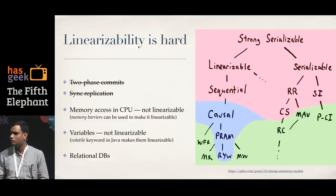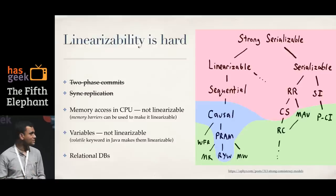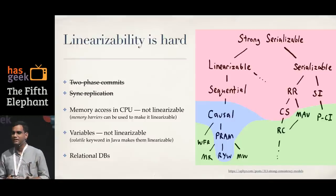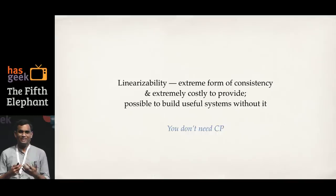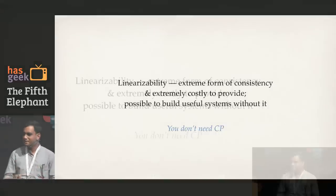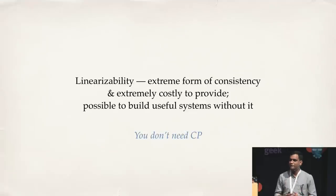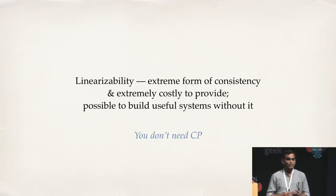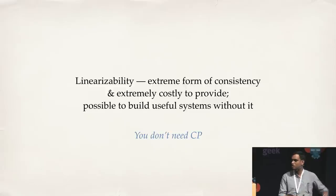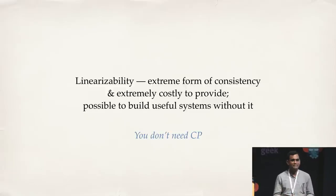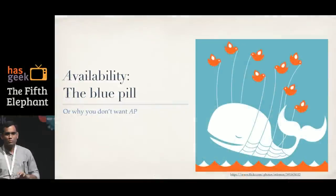Relational databases don't really offer linearizable consistency either. It is very hard to achieve — not just because it's such a strong guarantee, but because of the high latency and coordination required. The reality is most systems do not offer it, and we're able to build great systems without it. You don't need that sort of consistency. We've all been building software using relational databases that don't offer linearizability and we build good software with it.